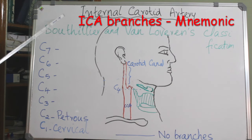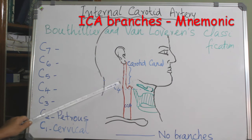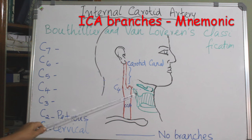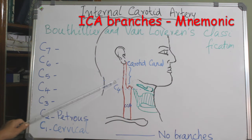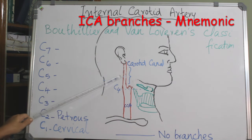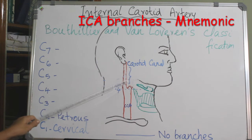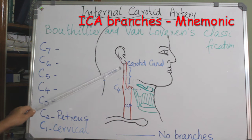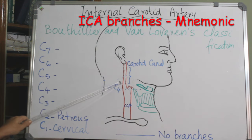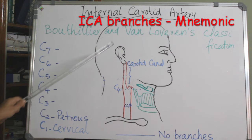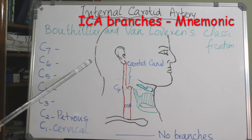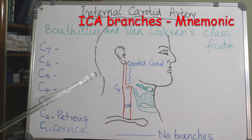This lecture covers the course and branches of the internal carotid artery. The common carotid artery divides into the internal carotid and external carotid artery at the level of the upper border of the thyroid cartilage, corresponding to the 4th cervical vertebra. The internal carotid artery is posterior to the external carotid artery. The ICA has no branches in the neck and goes intracranially, terminating by dividing into the middle cerebral artery and anterior cerebral artery.